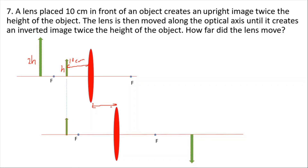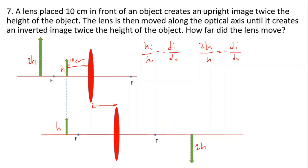In the second case, the lens is moved a distance x. Initially the object was between the focal point and the lens; now it is behind the focal point, producing an inverted real image. Using h_image / h_object = -d_image / d_object: 2h/h = +2 (upright), so d_image = -20 centimeters when d_object = 10 centimeters.